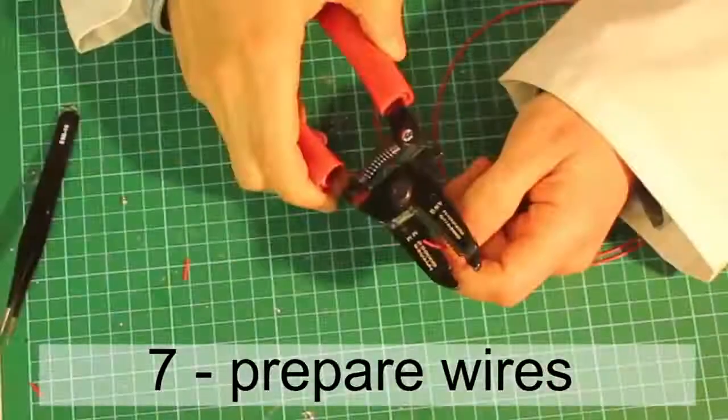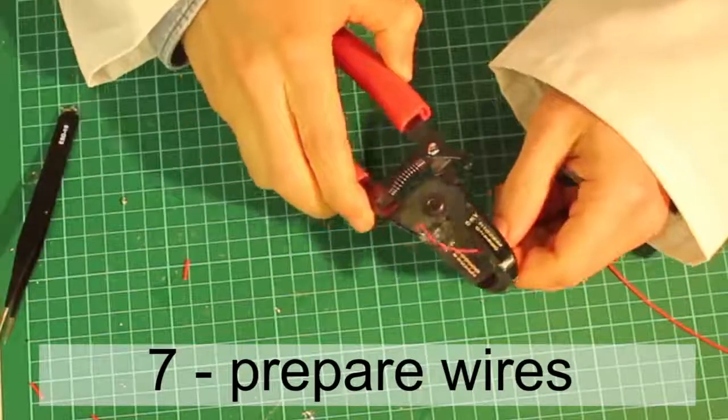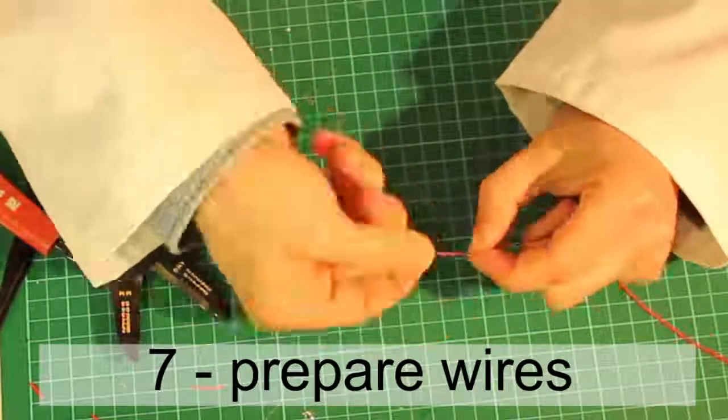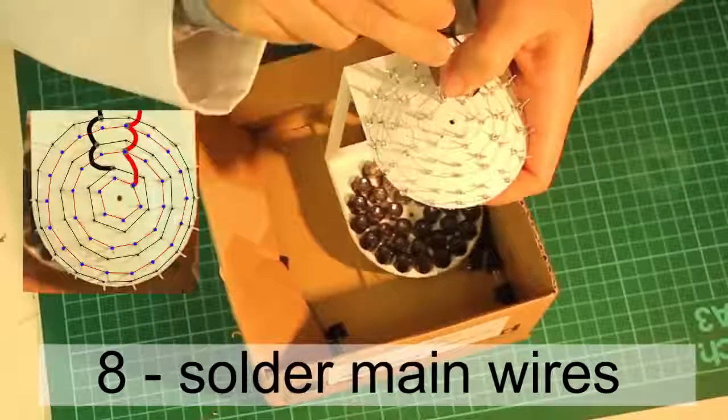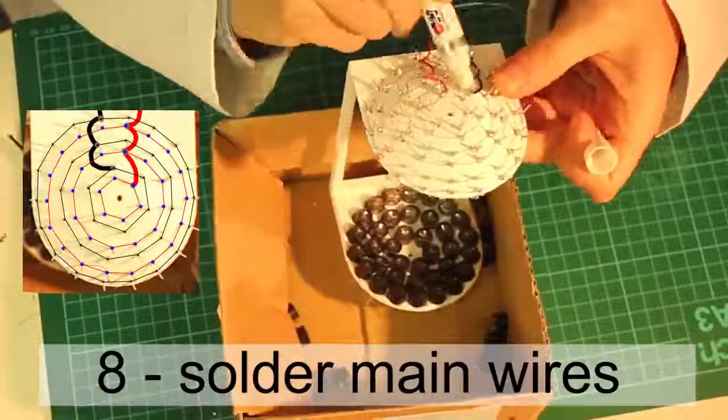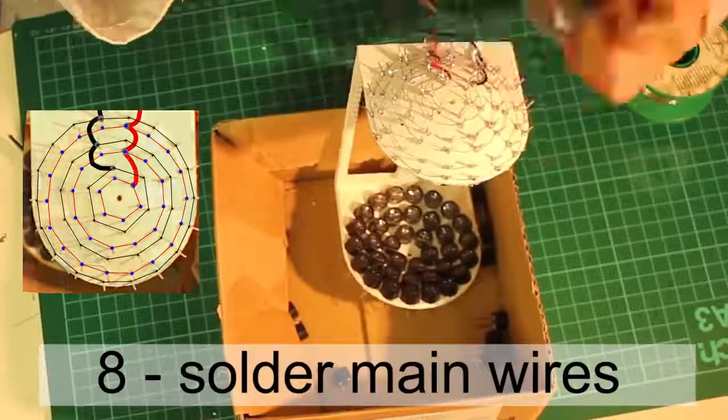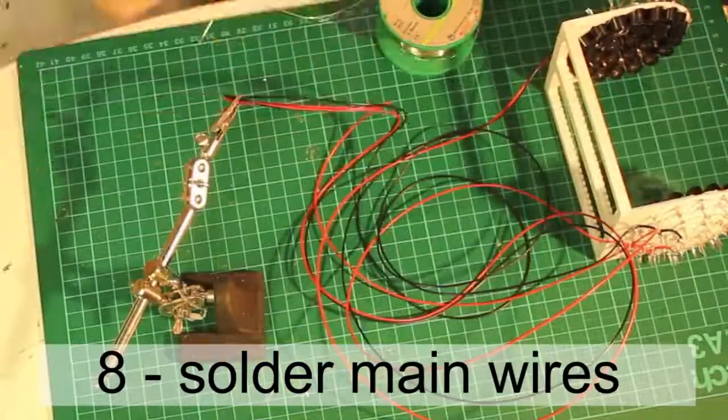We need four long wires with one side exposed and three exposed areas on the other side. Solder the black wire to three non-marked legs and the red one to three marked legs. Solder to secure them and connect the other sides.